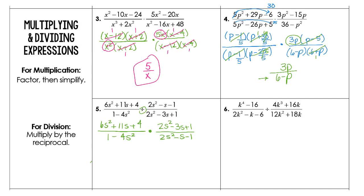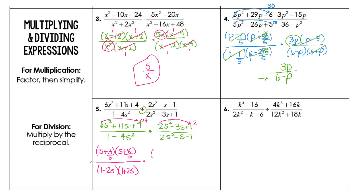Now we're ready to do the slide and divide and all of the factoring. Slide and divide gives me 24, so I factor this into s plus 3 times s plus 8 — don't forget to come back and divide by 6 because it was slide and divide. Down on the bottom, you're going to have 1 minus 2s times 1 plus 2s — that's your difference of squares. Then you're going to multiply over, giving s minus 2 times s minus 1, and divide by 2.